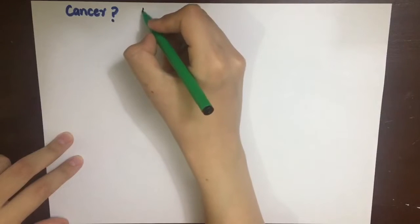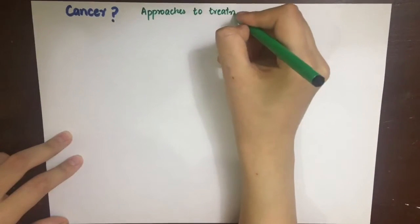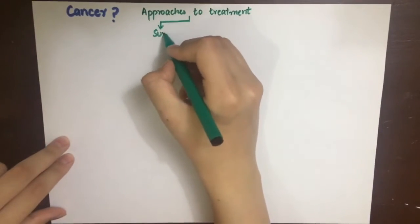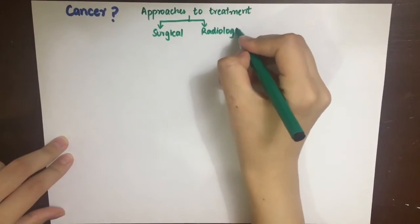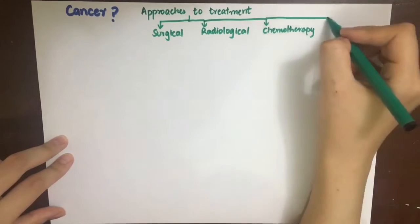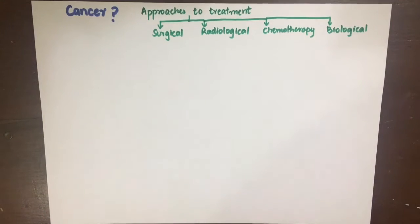Cancer is a disease that occurs when normal cells are transformed into cells that proliferate uncontrollably by responding differently to cell growth regulatory signals. There are many approaches to treating cancer: surgical, radiological, chemotherapy, and biological approach. In biological therapy, we use the body's own immune system to kill the cancer cells.